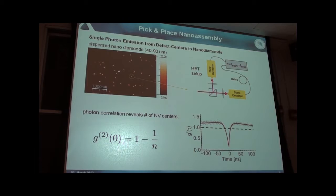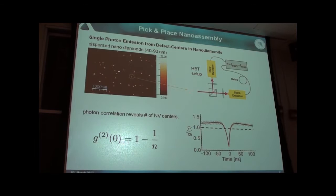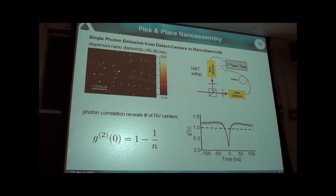We send the red light to a Hanbury Brown and Twiss setup to measure a photon correlation. We select the fluorescence, send it to a beam splitter, and measure the normalized autocorrelation function. This gives a number for how many defect centers are in a specific nanocrystal. The normalized autocorrelation function at time zero is just one minus one over N, where N is the number of independent emitters. For a single photon source, this is zero — the two detectors will never click at the same time. This allows us to experimentally determine how many defect centers are in a specific nanodiamond. We select out one that has the appropriate autocorrelation function, confirming the nanodiamond contains only a single NV center. That's a room temperature measurement and it's stable indefinitely.